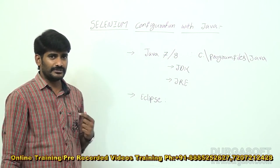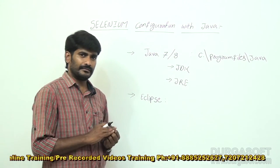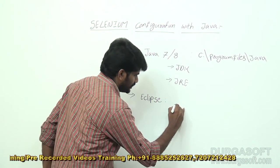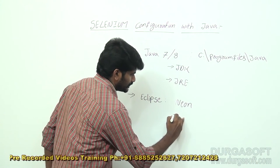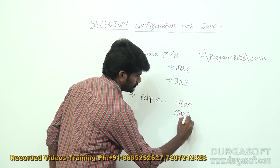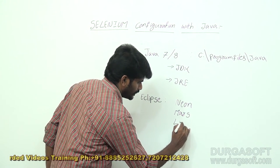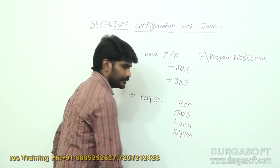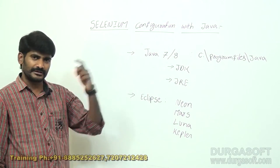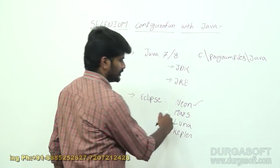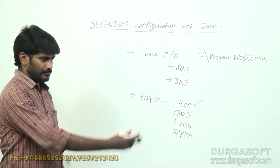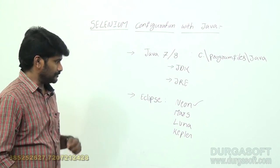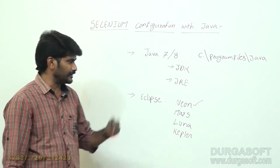In Eclipse there are different versions: Kepler, Galileo, Luna, Indigo, Mars. The latest version is Neon. Previous one is Mars. I am using the Mars version. Eclipse is an editor where we have to write the programs.